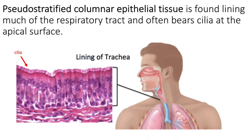Pseudostratified columnar epithelial tissue lines much of the respiratory tract — the nose and the trachea. Because of its location, it bears neat little structures called cilia, which beat and move. This tissue is moist due to mucus produced by the underlying mucosal glands, so any inhaled debris gets trapped in that sticky surface. The cilia function to sweep away that debris so it doesn't continue deep into your lungs.